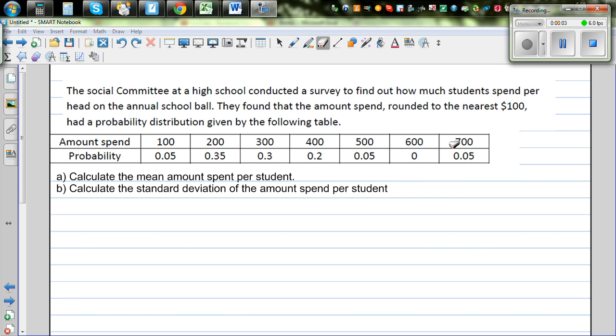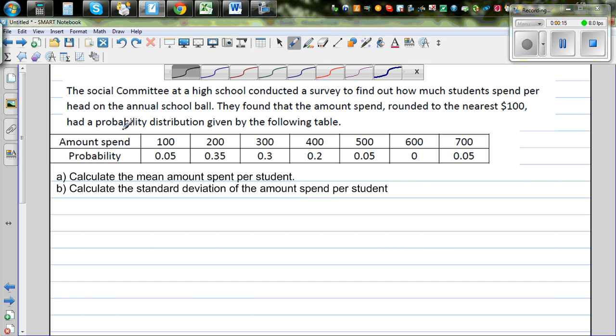The social committee at a high school conducted a survey to find out how much students spend per head on the annual school ball. They found that the amount spent, rounded to the nearest $100, had a probability distribution given by the following table.